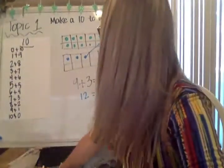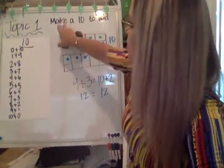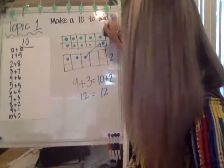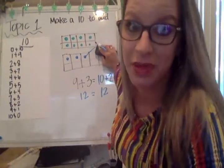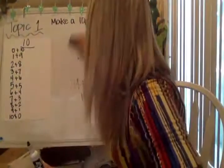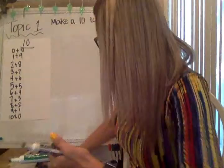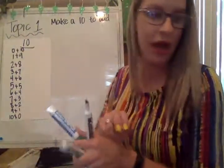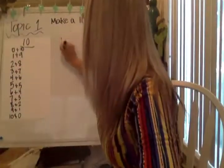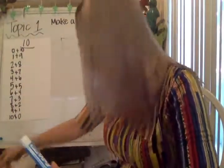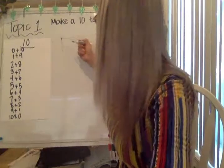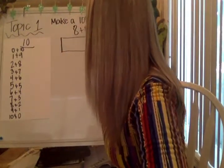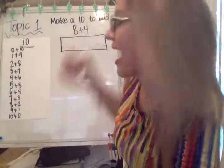So this is how you can make a 10. The first step is to learn that you can move these dots over. The second step will be to do that in your head. Let's do another one where we're going to use the 10 frame. Let's do eight plus four and make a 10 in order to add.